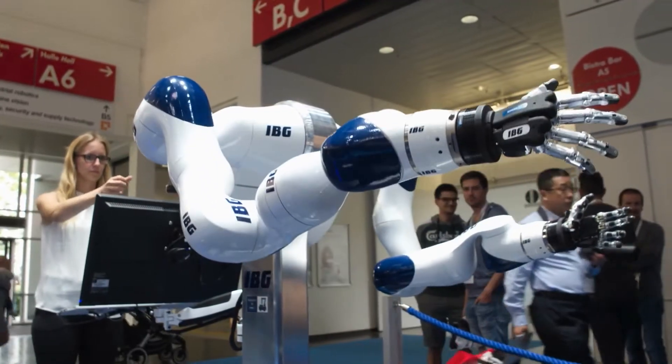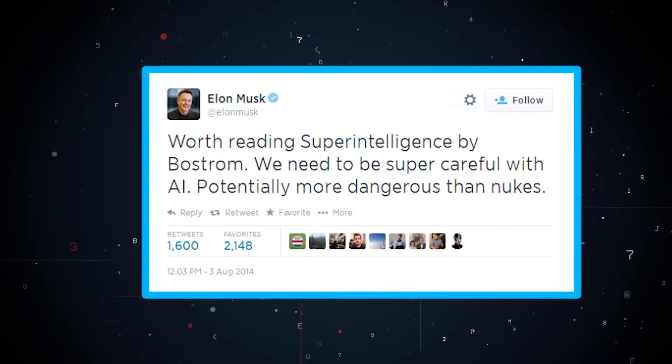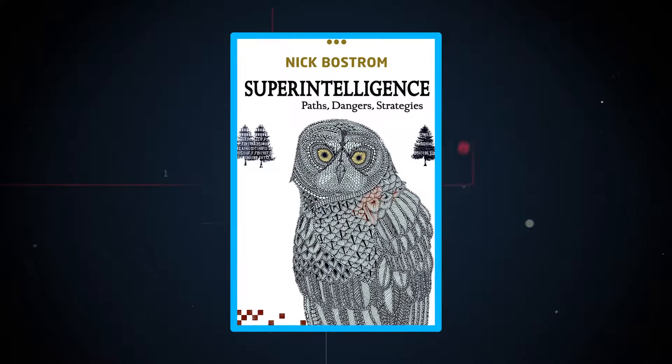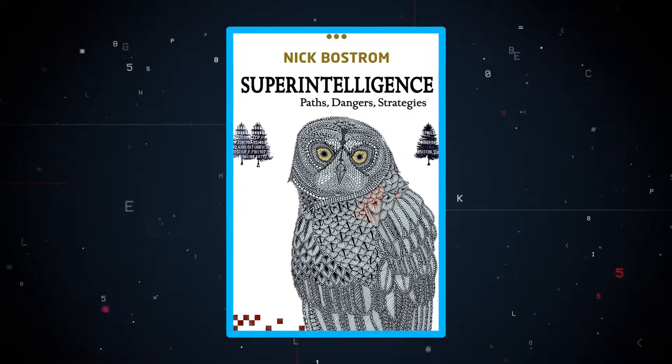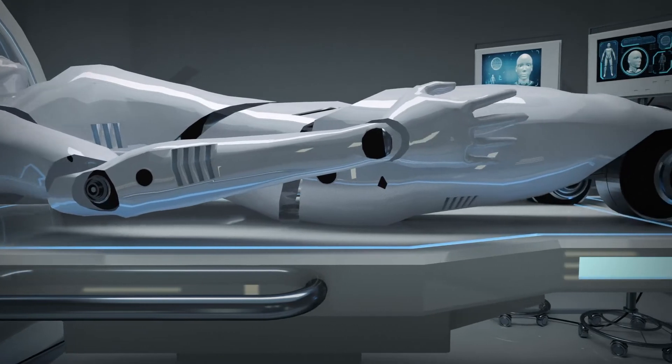So what exactly should we fear? Elon Musk once tweeted that artificial intelligence is, quote, more dangerous than nukes. This tweet is in reference to a book by Nick Bostrom called Superintelligence, and it talks about something called the control problem.